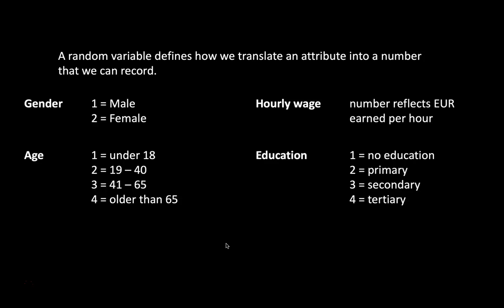Here are some examples. For gender, we might decide to record it as 1 for males and 2 for females. For age, we might decide that everybody under 18 is coded as 1, everybody between 19 and 40 as 2, everybody between 41 and 65 as 3, and anyone older as 4. Education could be done similarly: 1 for no education, 2 for finishing primary education, 3 for finishing secondary education, 4 for finishing tertiary education. Or sometimes we can more naturally assign a number — for example, for hourly wages it makes sense to just express it as the number of euros per hour earned.